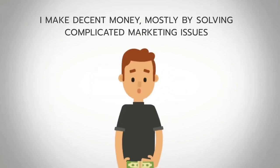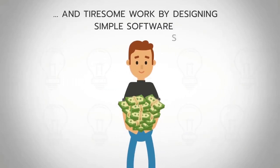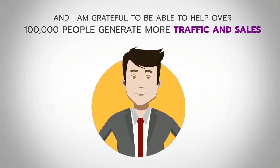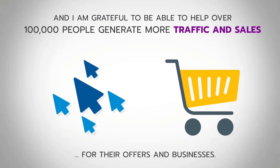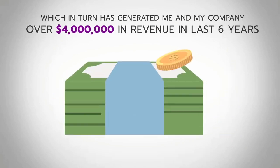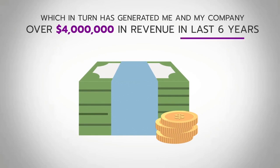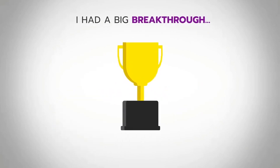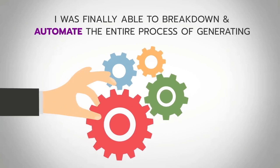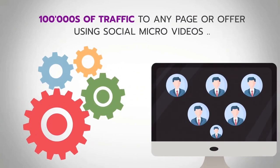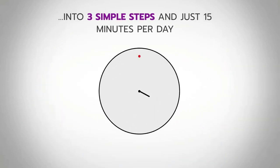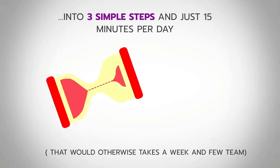My name is Yogesh Agarwal, and I'm not a guru. I make decent money, mostly by solving complicated marketing issues and tiresome work by designing simple software. It's my passion, and I'm grateful to be able to help over 100,000 people generate more traffic and sales for their offers and businesses, which in turn has generated me and my company over 4 million dollars in revenue in the last 6 years. After months of research and another few months of coding, I had a big breakthrough — I was finally able to break down and automate the entire process of generating hundreds of thousands of traffic to any page or offer using social micro-videos in 3 simple steps and just 15 minutes per day, that would otherwise take weeks and a few team members.